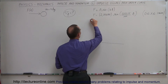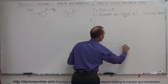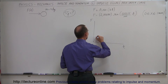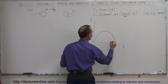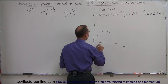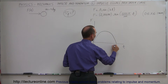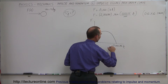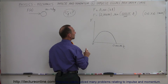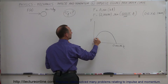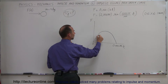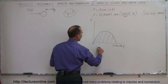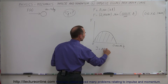We have force on the vertical axis and time on the horizontal axis. The force will look like a sine wave, or at least one portion of a sine wave, where we go from 0 to 0.001 seconds — which of course is a millisecond. The impulse, then, would be the area underneath this curve.